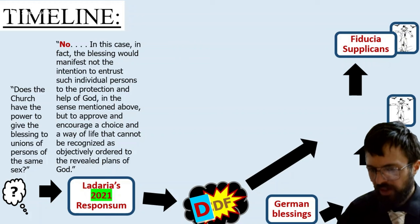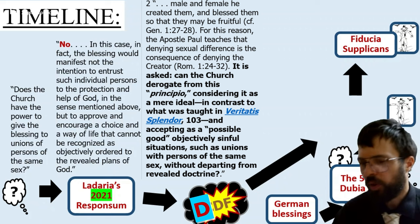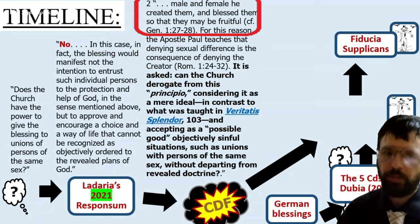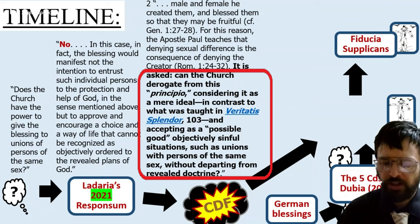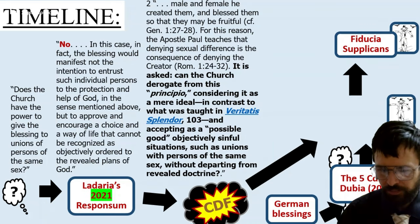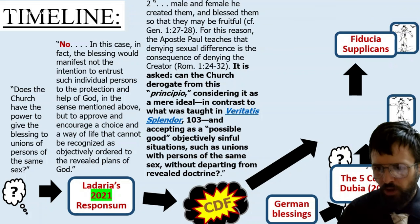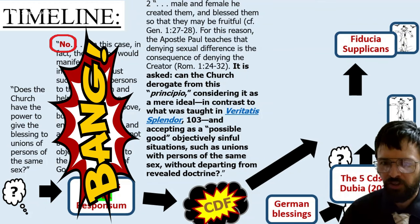Simultaneously, five conservative cardinals asked their five dubia in 2023, trying to knock out the German blessings. They asked: based on Genesis 1, speaking of sexual complementarity, reinforced by Romans 1, can the Church deviate from Veritatis Splendor's moral doctrine and accept as possible goods objectively sinful situations? This was way too juicy for Francis and Fernandez — a great occasion to hardwire and formalize the reversal of Ladaria's response. But they didn't quite know how to do it yet.